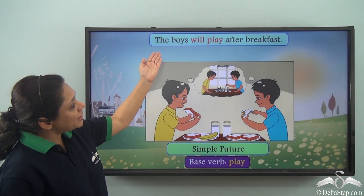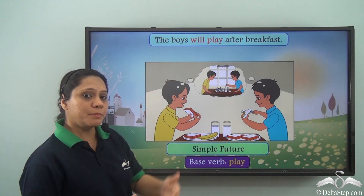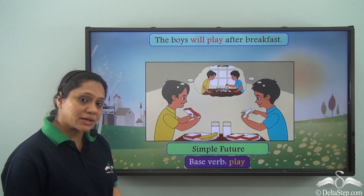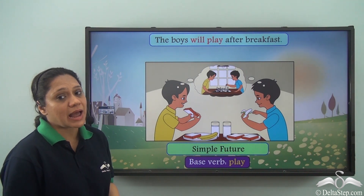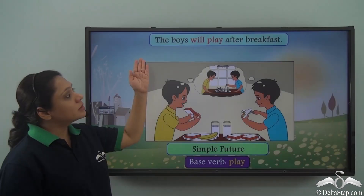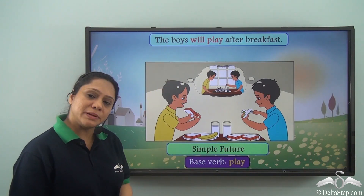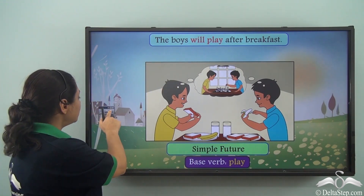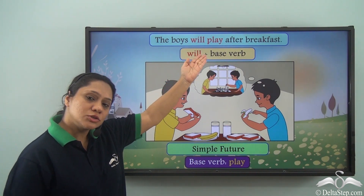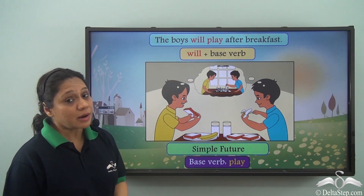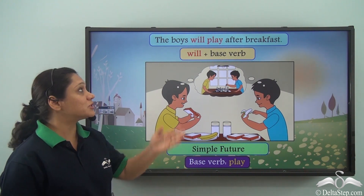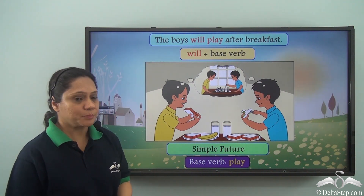The boys will play after breakfast. This sentence is in the simple future tense because it is telling us an action that can happen in the future. The verb in the simple future tense is formed by adding 'will' to the base verb. Remember, we can also use 'shall' if the subject is 'I' or 'we'.